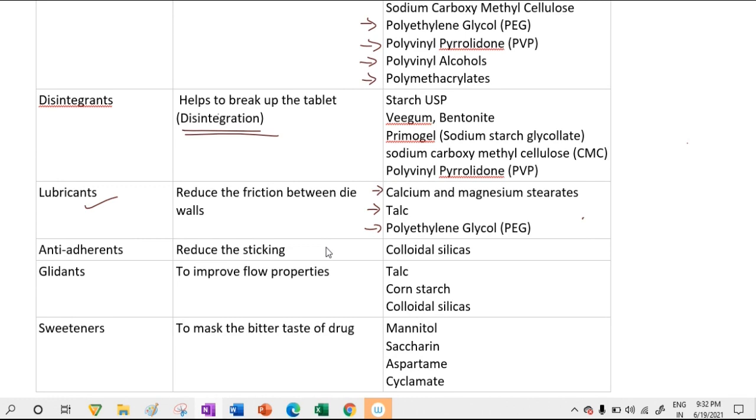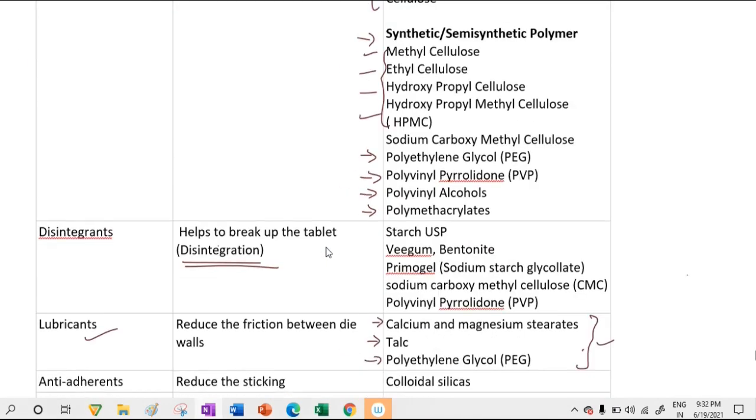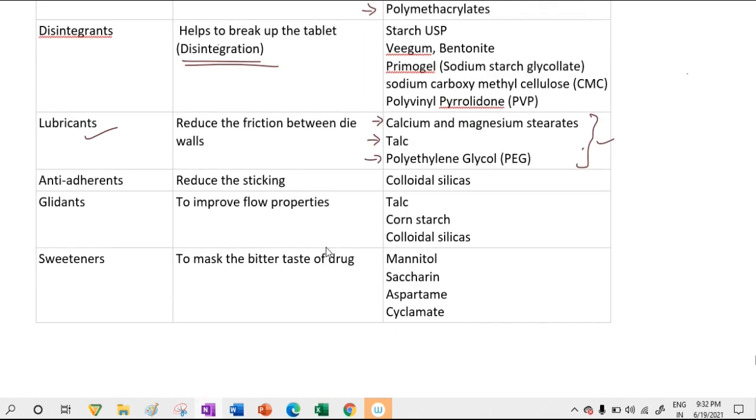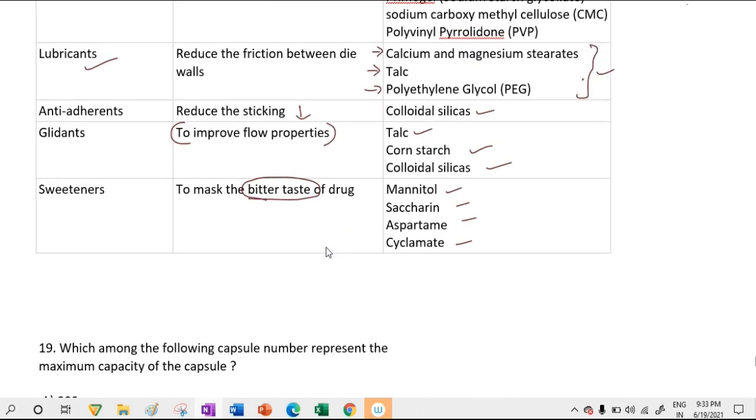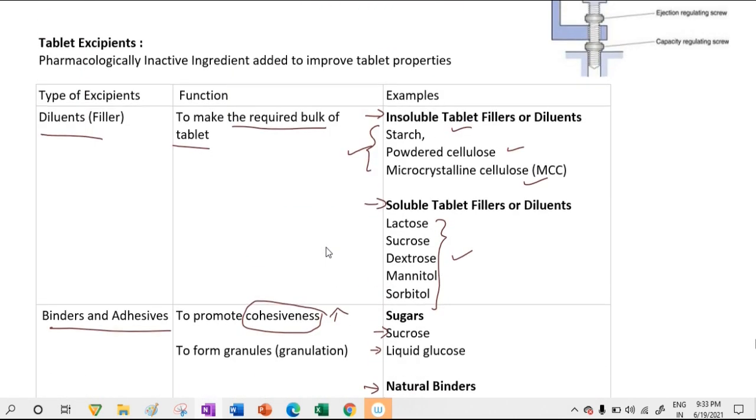Anti-adherents prevent sticking. Glidants improve flow property with examples like talc, corn starch, and colloidal silica. Sweeteners mask bitter taste with examples including mannitol, saccharin, aspartame, and cyclamate. These are important excipients used in tablet formulation.